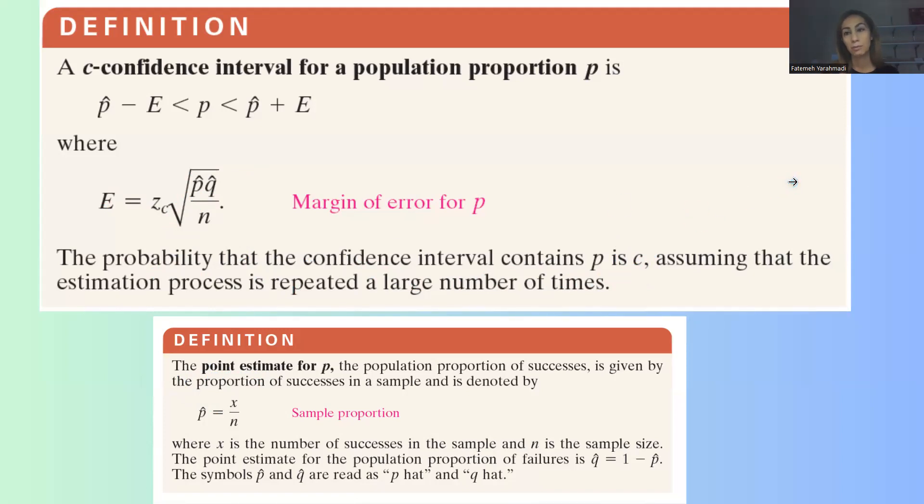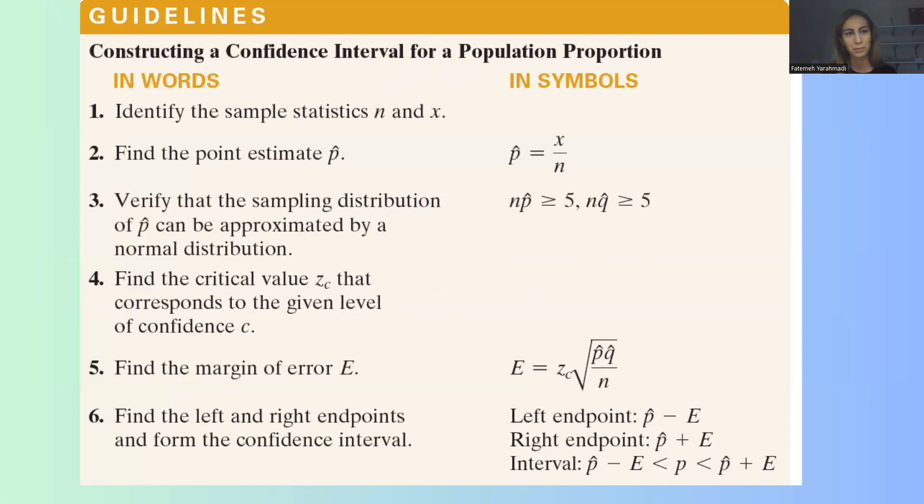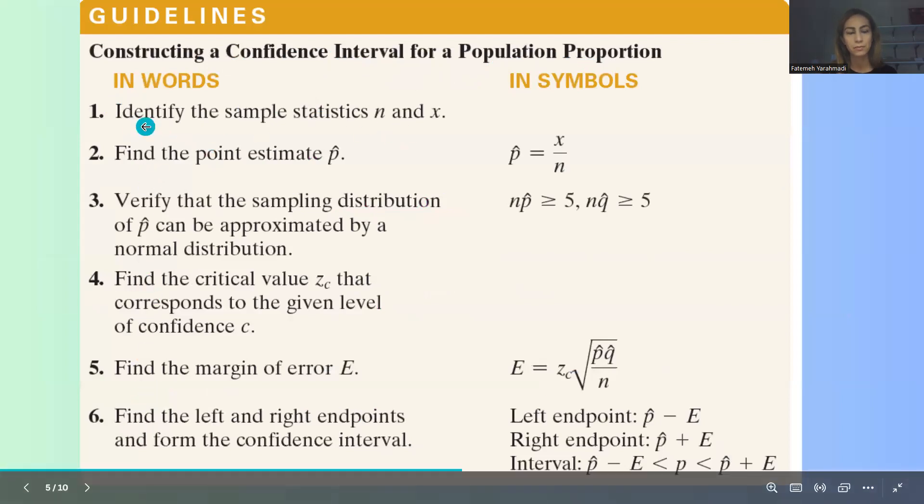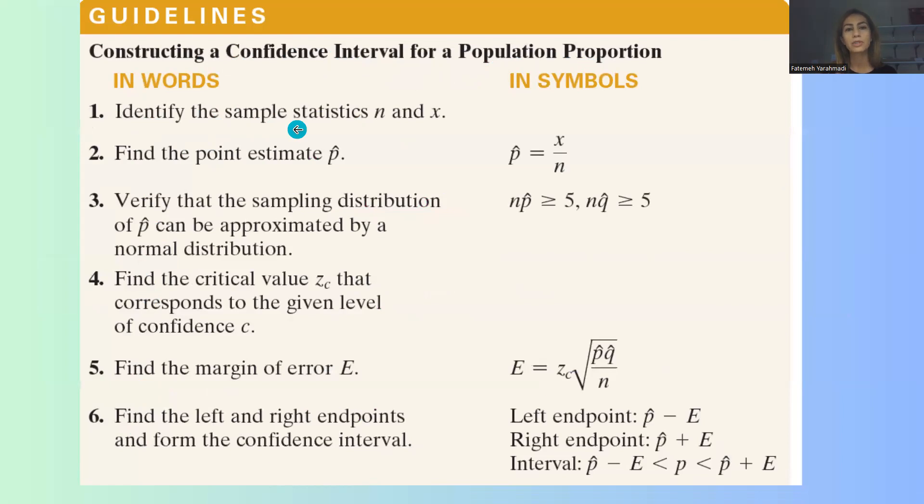Now what are the steps in building that confidence interval? To construct a confidence interval for population proportion, we need to follow these six steps. First of all, we need to identify the sample statistics n and x. Remember that n is your sample size and x is the number of successes in that sample.